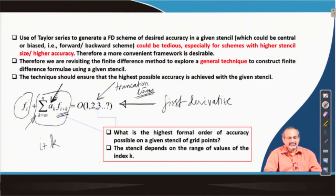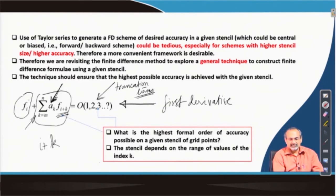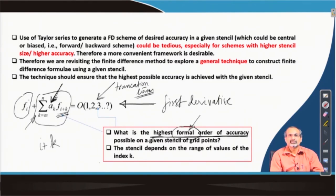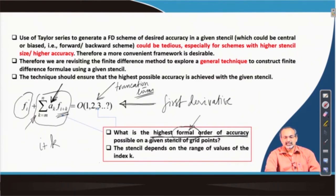The question to ask is: how wide is my stencil? That will be answered by the numbers m and n. The second question is: given that stencil, what would be the highest order of accuracy achievable? When we talk about order of accuracy in the Taylor series sense, we often use the term formal accuracy. We are interested in maximizing the formal order of accuracy of the approximation for the given stencil — that is essentially our target.